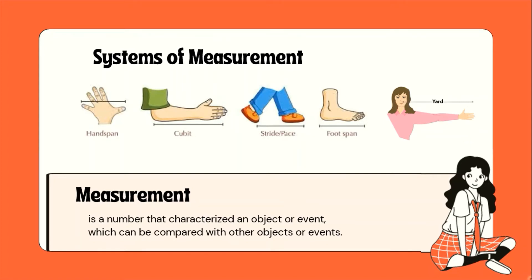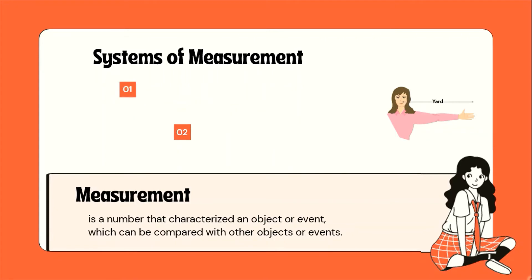Some of the units sa non-standard system of measurement ay na-derive din at ginagamit sa ating unang system of measurement, which is the English system. Pero this time, meron na siyang specific na sukat. Tulad itong yard, meron ding yard sa English system. Meron ding inch, meron ding foot.